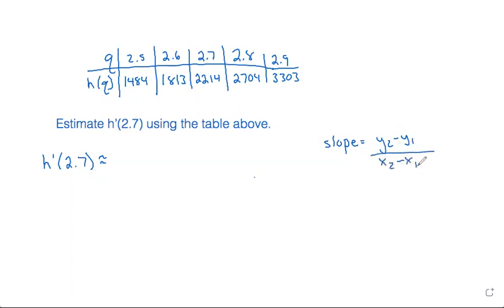And we don't want to take data at 2.7, but we want to take values of q that span 2.7. So let's take our x1 as 2.6 and x2 as the 2.8. We want to span the 2.7.